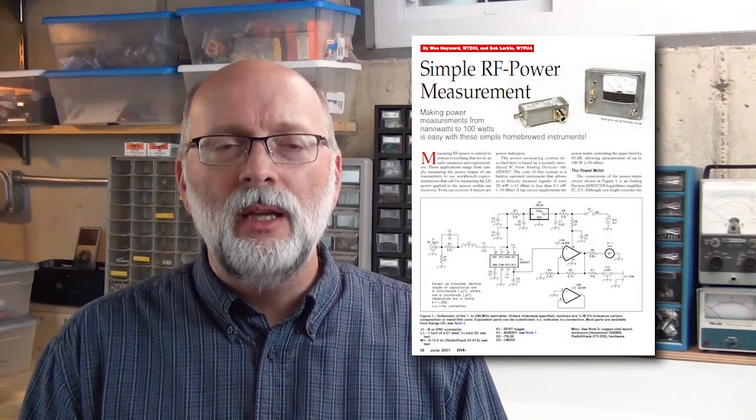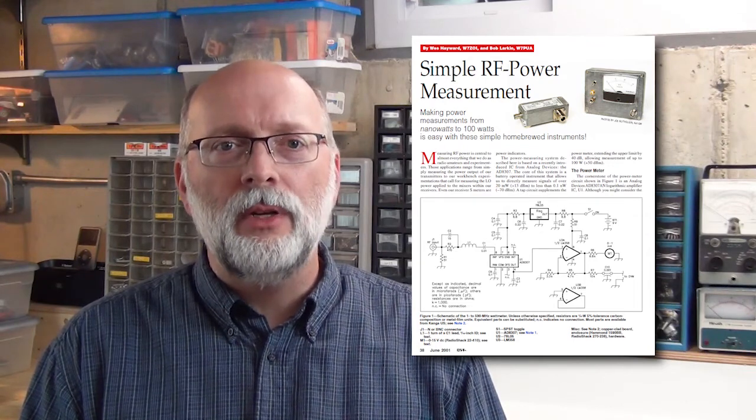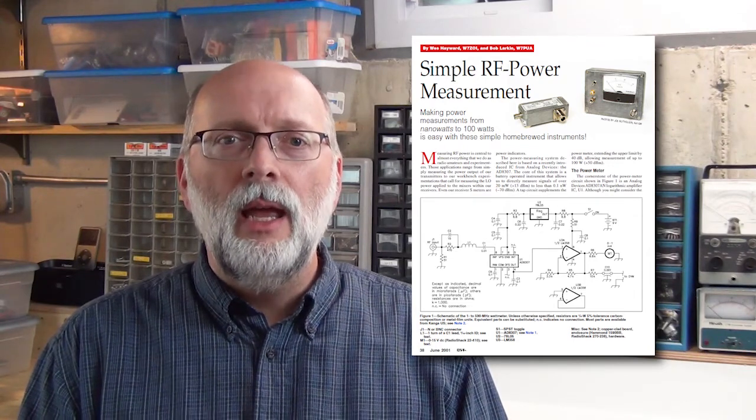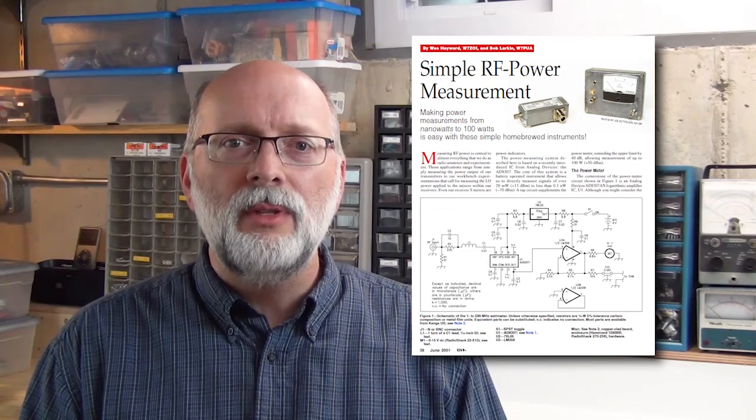The source of this idea comes from a June 2001 QST article titled Simple RF Power Measurement, written by Wes Hayward, amateur call sign W7ZOI, and Bob Larkin, amateur call sign W7PUA. Now the main focus of the article is actually how to build this RF power meter, and as you can see I've done the project and built this meter. It's one of the most useful projects I have in my lab.